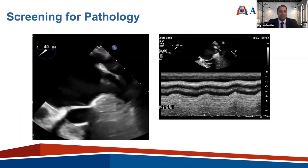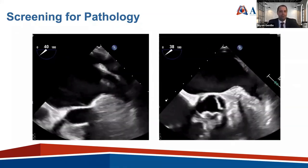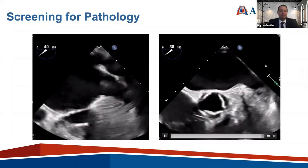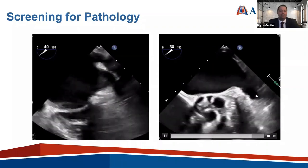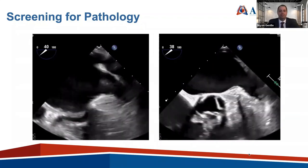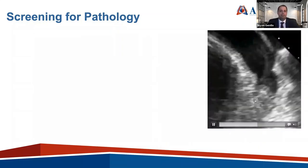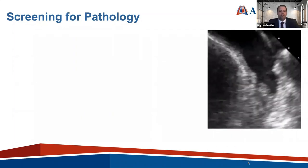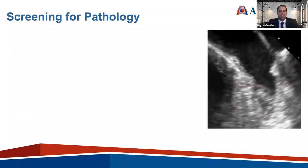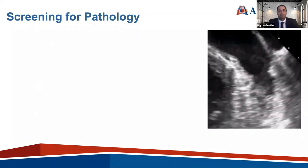A good teaching technique to exclude thrombus in ambiguous situations is to advance the probe a little further, provide more anteflexion, and move the atrial ridge to the right side of the screen, allowing visualization through the body of the left atrial appendage. Here's an example of a true thrombus within the apex of the left atrial appendage in a patient with amyloid cardiomyopathy. In our lab, we would not approach this patient for percutaneous closure due to the risk of embolizing the thrombus.